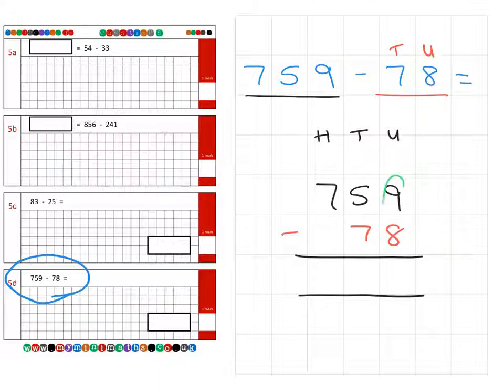We perform the calculation. First, nine units take away eight units is one unit. Then five tens subtract seven tens - the seven's too big, so we borrow from the hundreds column. Seven hundreds becomes six hundreds, and we bring one hundred over to make 15 tens. 15 tens take away seven tens is eight tens. Finally, six subtract nothing gives 600, for a final answer of 681.